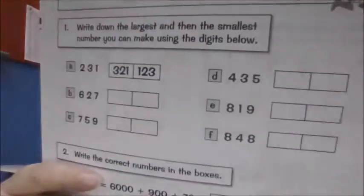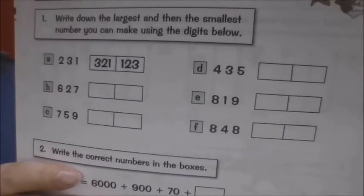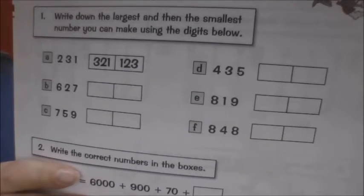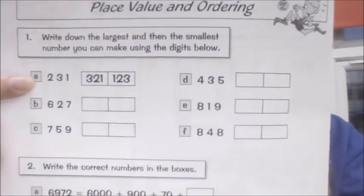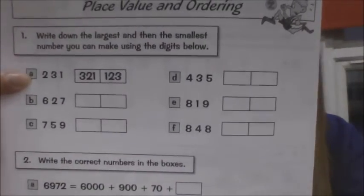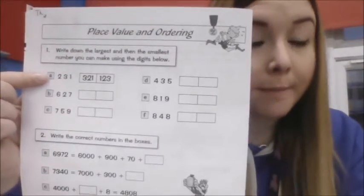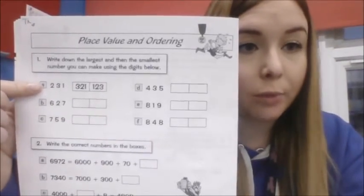So let's have a look at our first question. Question number 1 is asking you to write down the largest and then the smallest number that you can make using these digits. Now you can only use the digits that are shown on each question. So for A you can only use the digits 2, 3 and 1. And you've got to muddle the order up to create the biggest number possible and the smallest number possible.